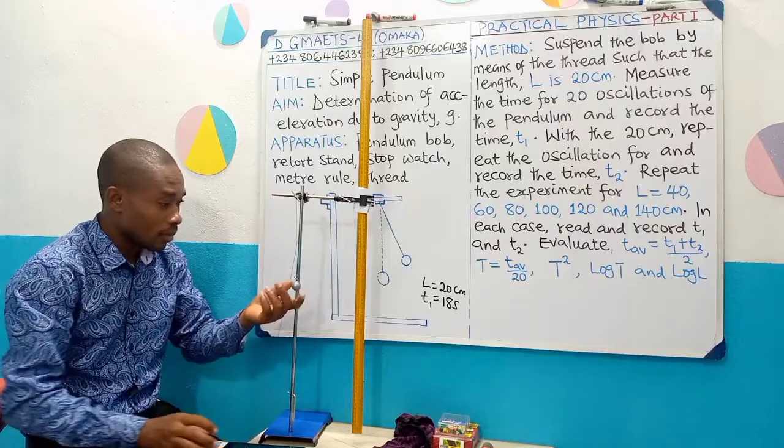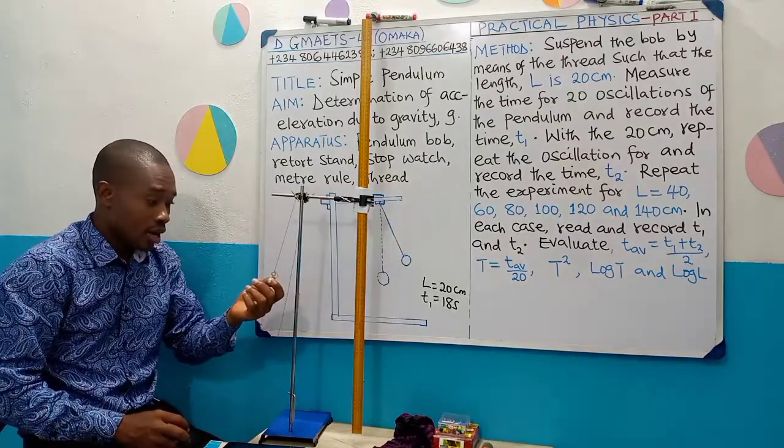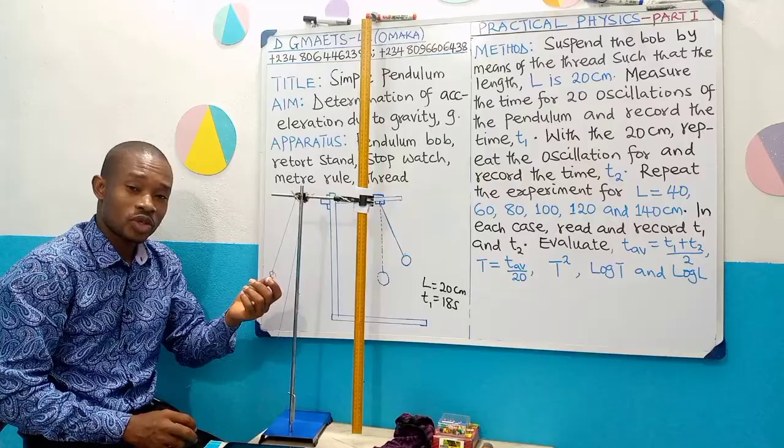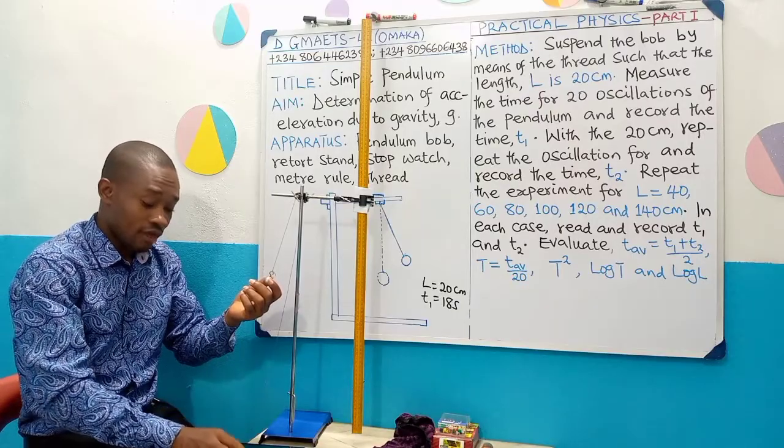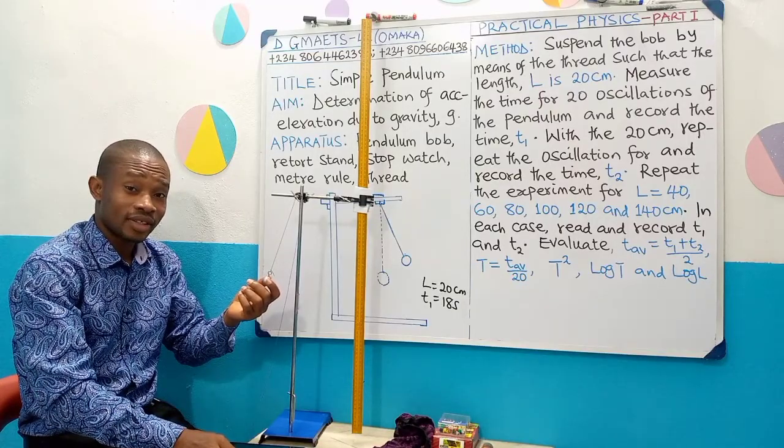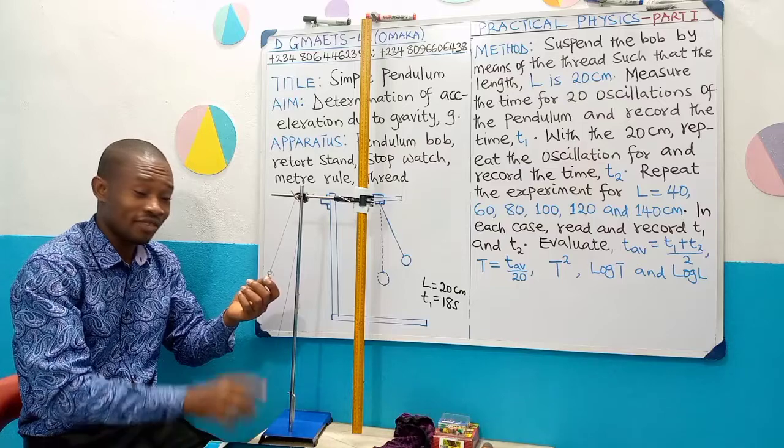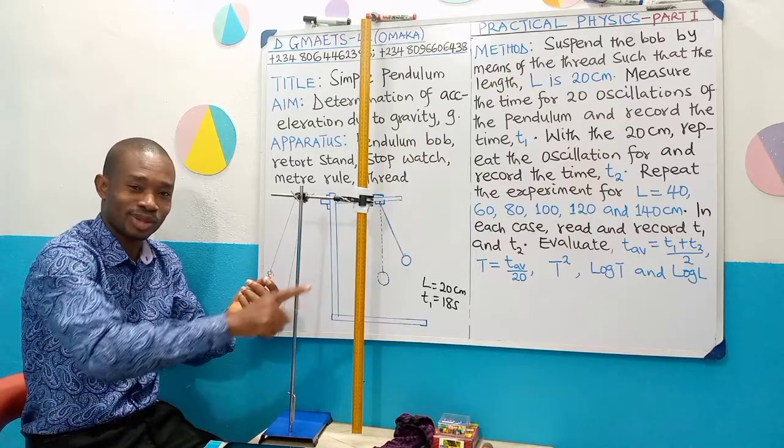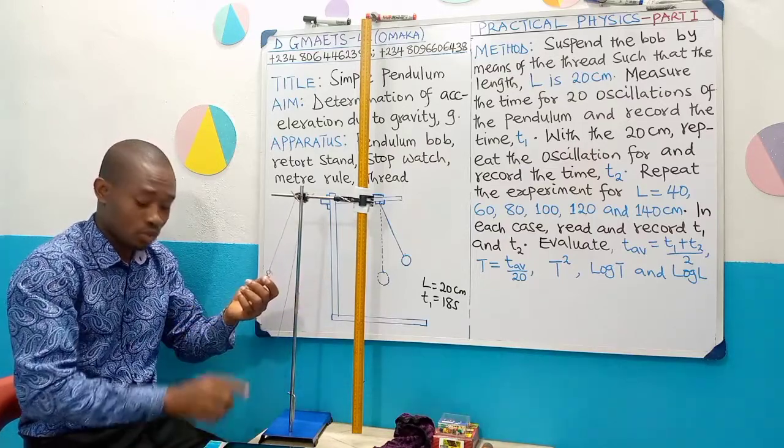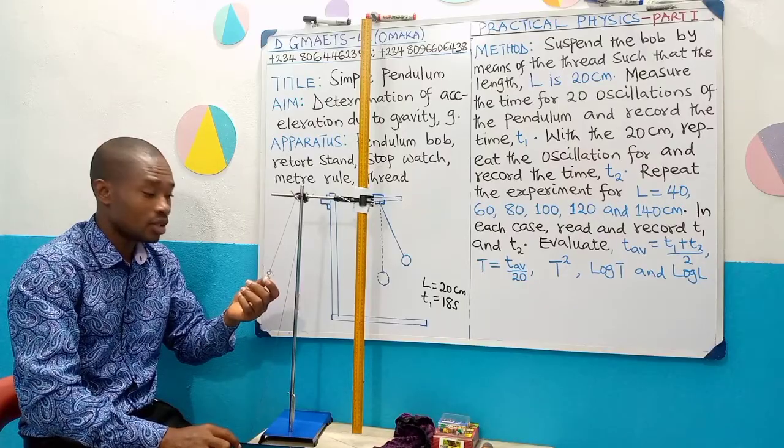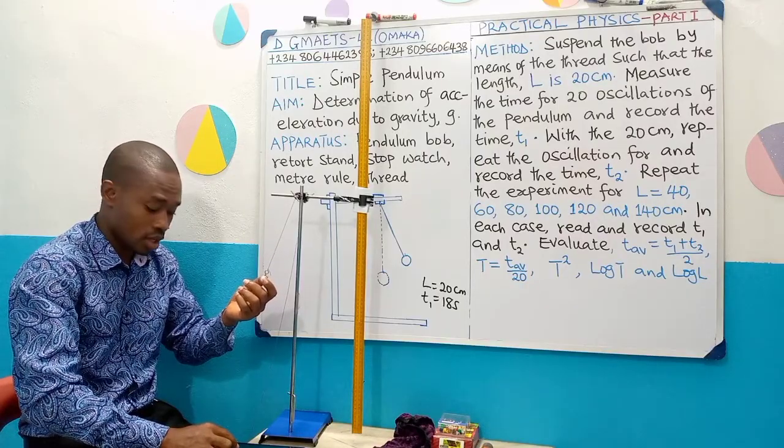Now I'm set. I've displaced through a small angle, I've gotten my stopwatch ready. So remember the rule, as you leave it goes one, two, and as you're releasing it, you put on your stopwatch at the same time. So I'm ready to do that.